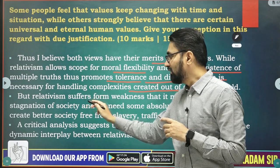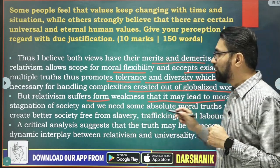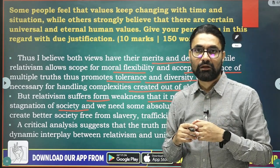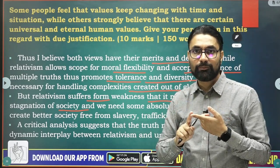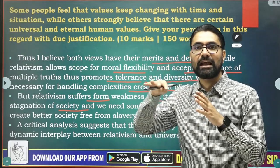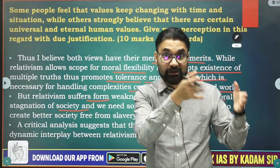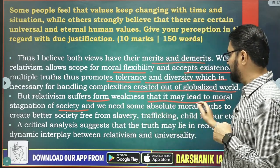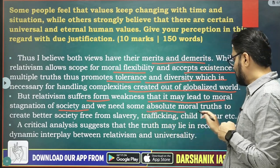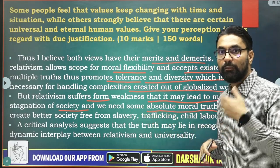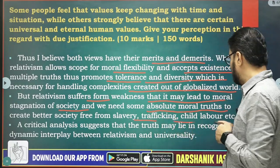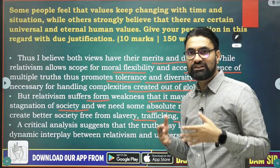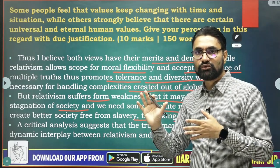But relativism also suffers from weakness — it may lead to moral stagnation of society. Reformers end up being called criminals and there is no moral evolution. We need some absolute moral truths to build a better society — free from slavery, trafficking, and child labor. For that, relativism is not enough; we need absolutism. A critical analysis suggests the truth lies in recognizing the dynamic interplay between relativism and universality.